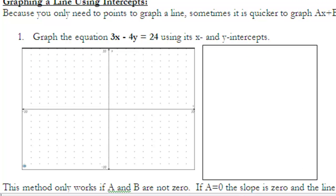Let's take a look at this first example problem. It says graph the equation 3x minus 4y equals 24 using its x and y intercepts. You'll notice that that equation is in standard form, and your A value is 3, your B value is negative 4, and your C value is 24.